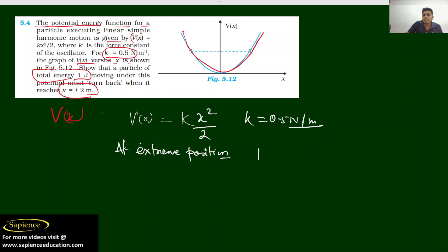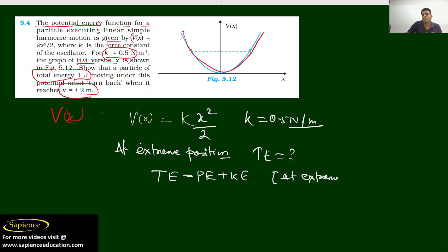Since the particle executes simple harmonic motion, at the extreme position total energy equals potential energy plus kinetic energy. But at the extreme position, kinetic energy is 0. So total energy will be equal to potential energy only at the extreme position.